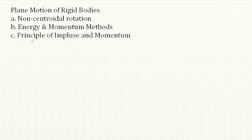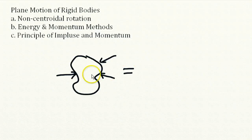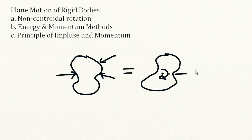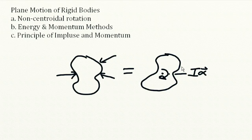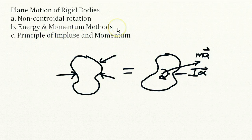We talked about the plane motion of rigid bodies — we have some type of rigid body with different forces applied to it, and we can write this with a rotation characterized by I, the moment of inertia, times alpha, and the mass times the acceleration. We broke that down into three subcategories: non-centroidal rotation, energy and momentum methods, and the principle of impulse and momentum.